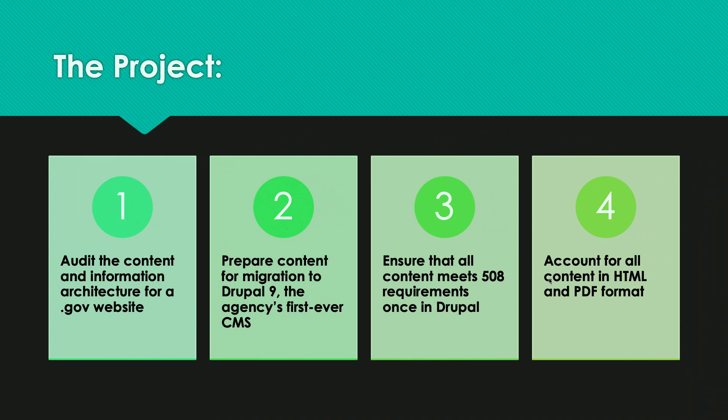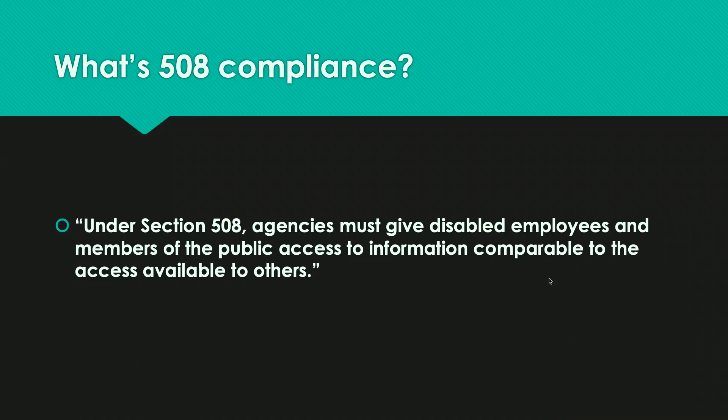We had to do this project in four key phases across the initial six-month discovery period. We started by auditing the content and information architecture for the .gov website as it existed in PHP. We then had to prepare all of the content for migration to Drupal 9. This was going to be the agency's first ever CMS, so they had literally decades of content and data on their website that was not managed in any type of structure in the PHP site.